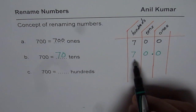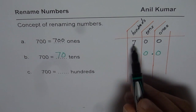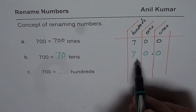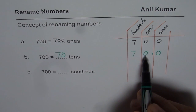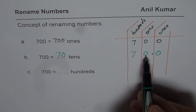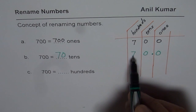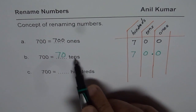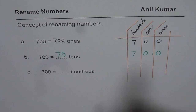To remind you: seven dollars will be 700 pennies or 70 dimes. If you have 10 cents each, 70 of those 10-cent coins will make 700 pennies. That gives you a broad idea of how renaming with tens works.